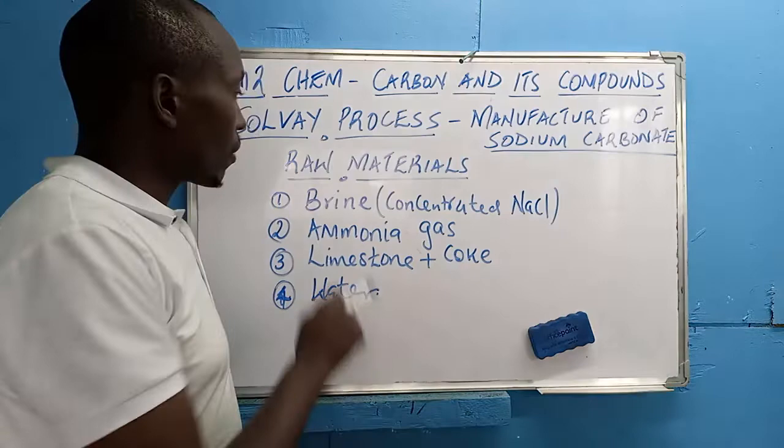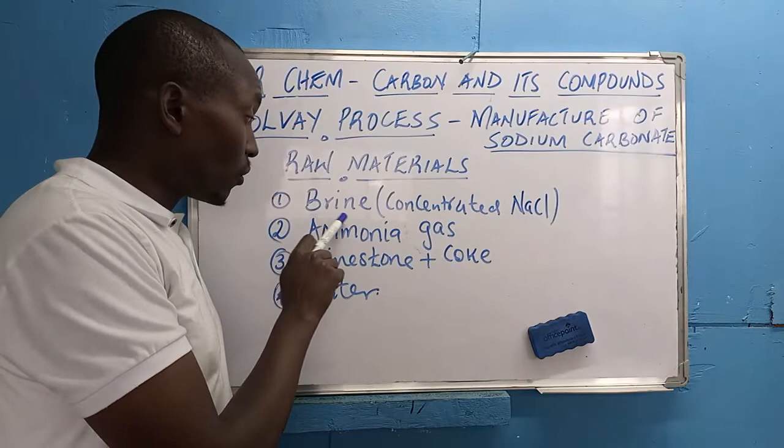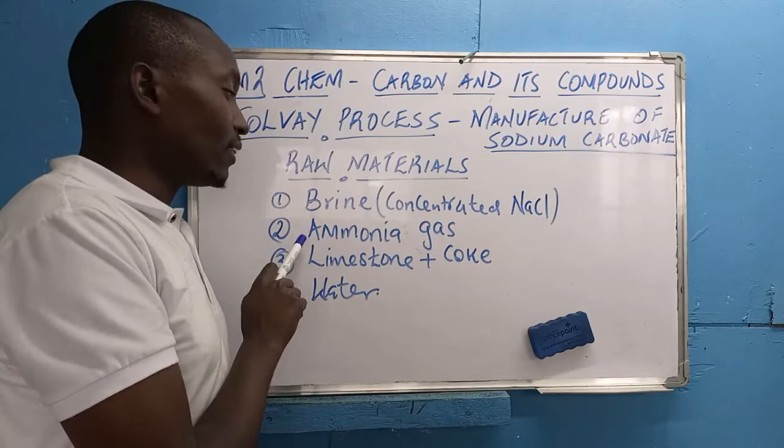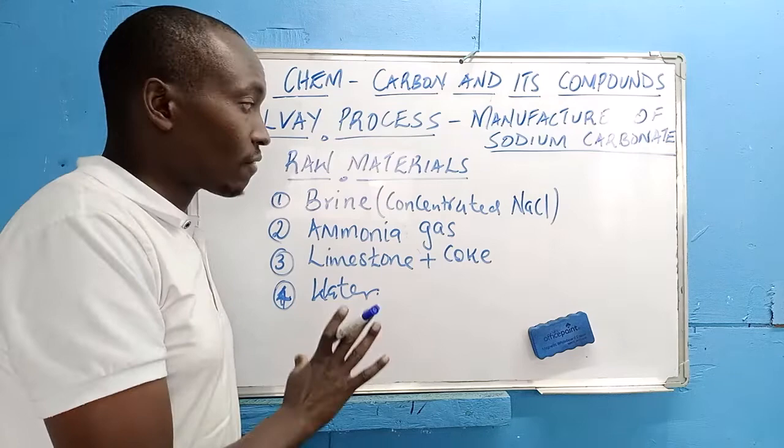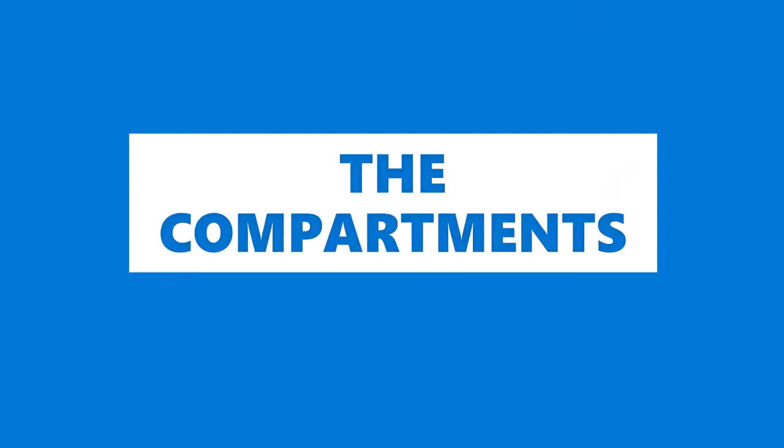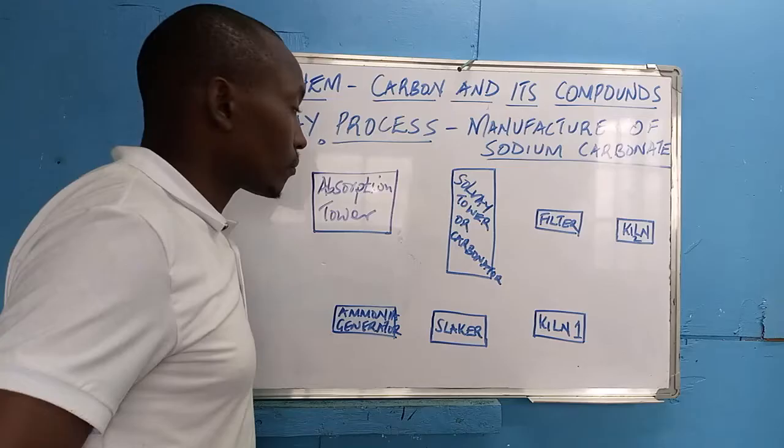Any industrial process must start with raw materials. For the Solvay Process, the raw materials are: brine, which is concentrated sodium chloride; ammonia gas; limestone, specifically mixed with cork; and water. Those are the four main raw materials for the Solvay Process.